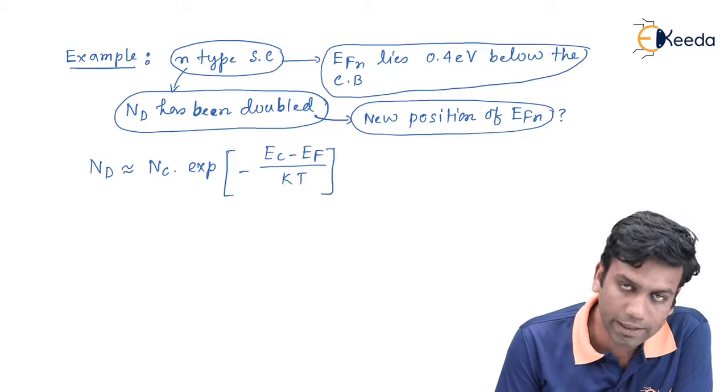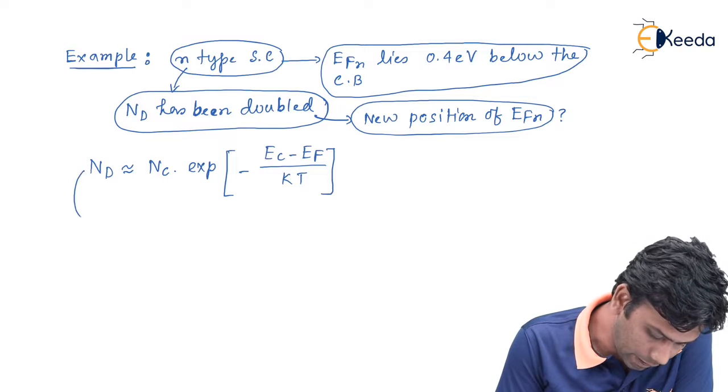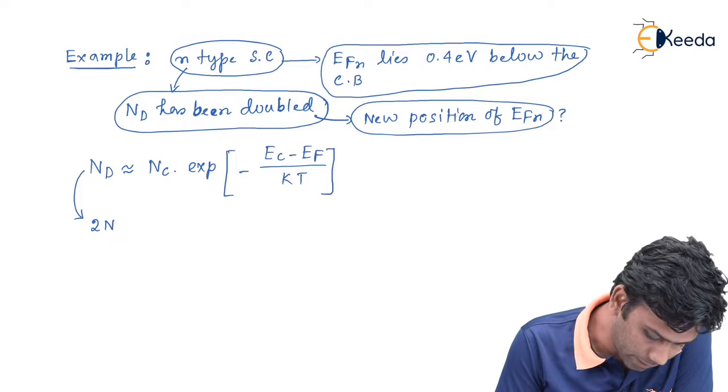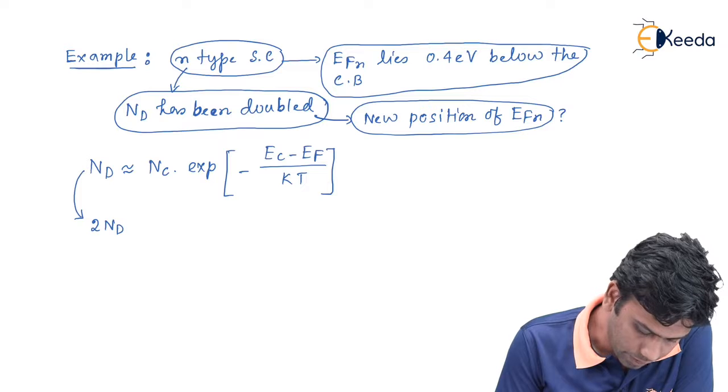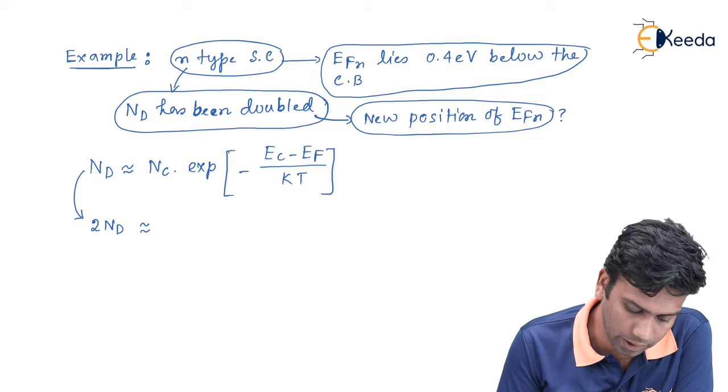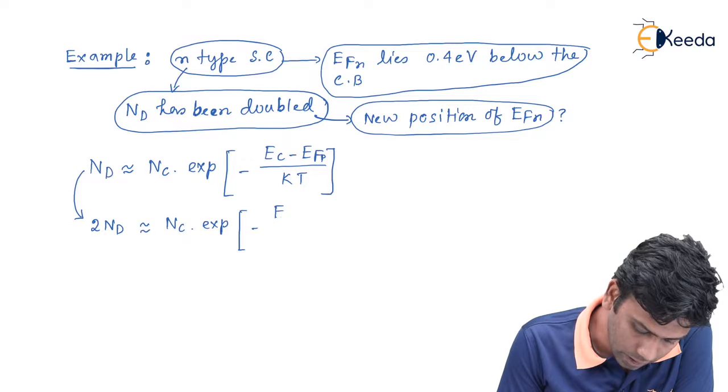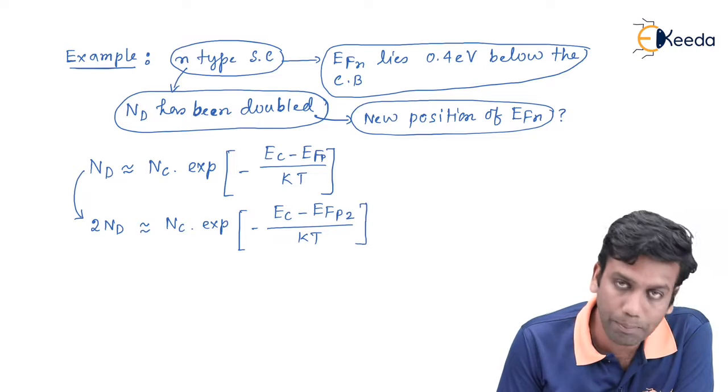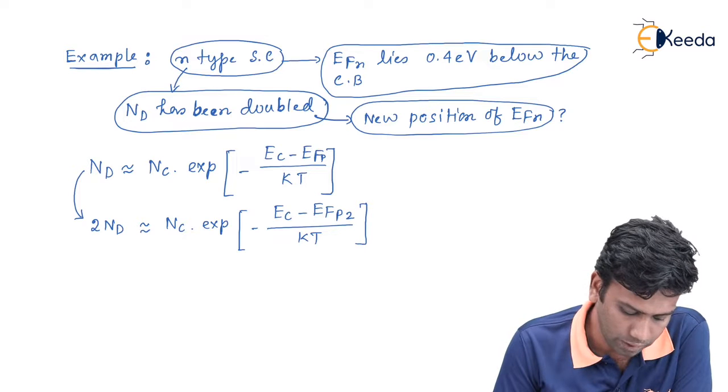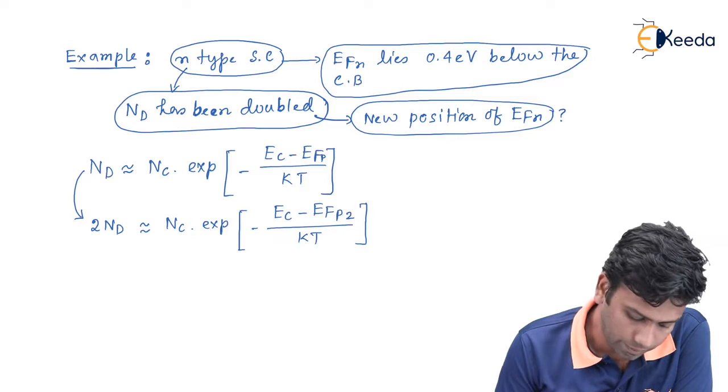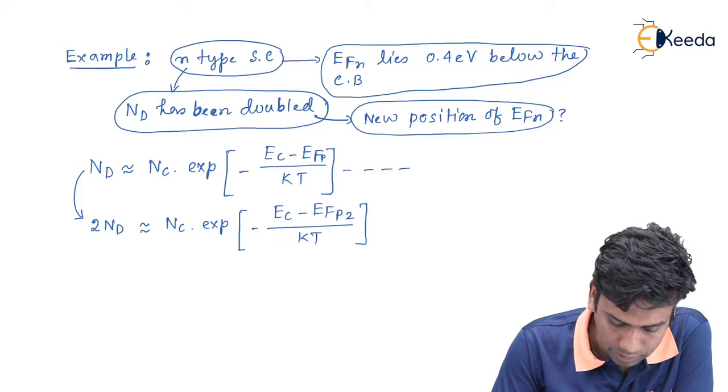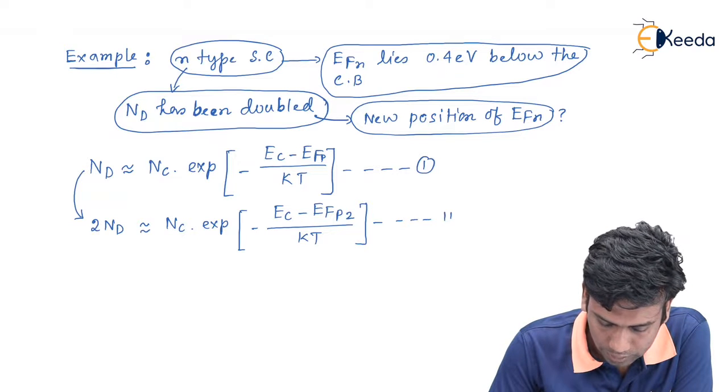So, since the Nd has been doubled, we can write this Nd has been converted to 2Nd. Now, due to this we will have a new position of the Fermi level EFP. That is, 2Nd can be written as Nc exponential minus EC minus EFP2 divided by KT, where EFP2 is the new Fermi level position for the double donor concentration. Now, if I name this equation as 1 and this one as equation number 2...